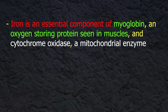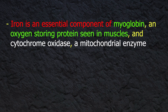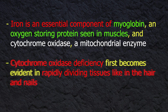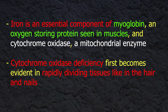Iron is also an essential component of myoglobin, an oxygen-storing protein found in muscles, and cytochrome oxidase, a mitochondrial enzyme. Cytochrome oxidase deficiency first becomes evident in rapidly dividing tissues like the hair and nails. Lack of iron can therefore manifest through several clinical features.